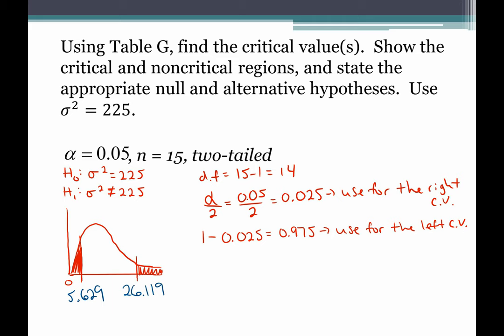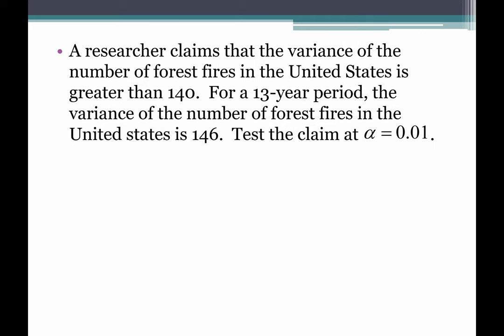Now let's look at a full five-step hypothesis test. A researcher claims that the variance of the number of forest fires in the United States is greater than 140. For a 13-year period, the variance is 146. Test the claim at alpha = 0.01. This is the section for variance and standard deviation — the big keyword here is 'claims that the variance.' That's how we know what we are testing. Be very careful with your symbols.